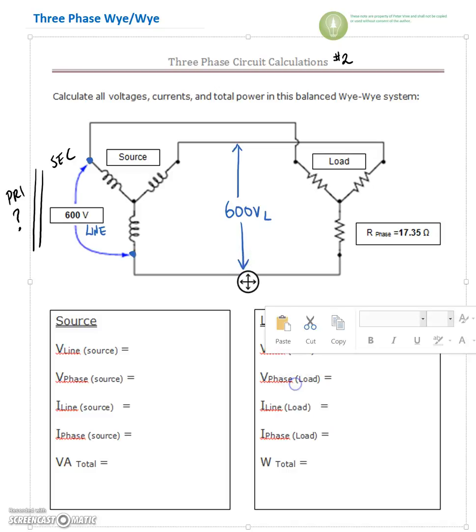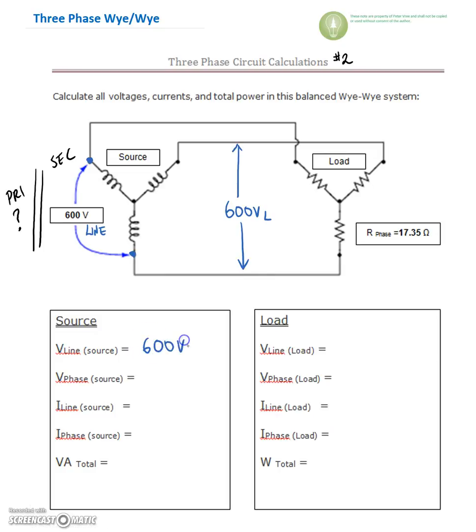So we can say that this guy is 600 volts on the line, and that secondary of the transformer is feeding this Y load. That same voltage is going to be from here to here.